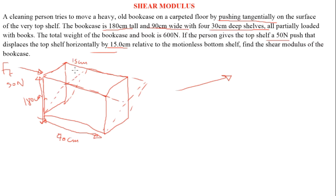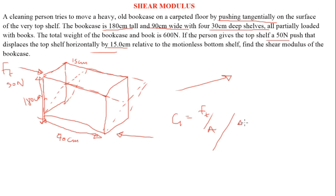This is the displacement caused by the tangential force applied horizontally. According to the formula, the shear modulus G equals the tangential force per unit area, divided by the horizontal displacement of the solid divided by the height of the solid, which is 180 centimeters.